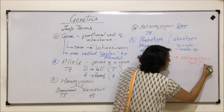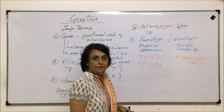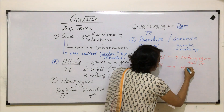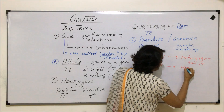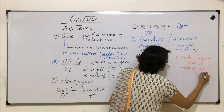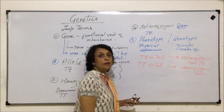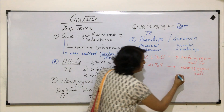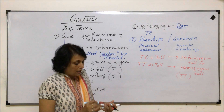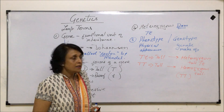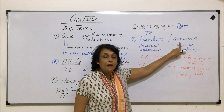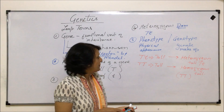When we talk of heterozygous tall, we are talking of its genetic makeup. Heterozygous means one dominant and one recessive. And when we talk of a homozygous tall plant, we mean that both the genes present are the dominant genes. So only appearance is phenotype, and the genetic makeup is the genotype.